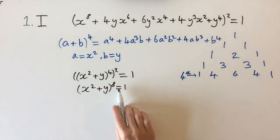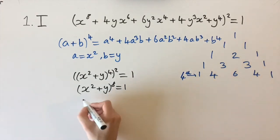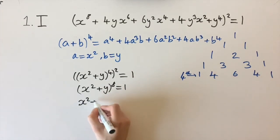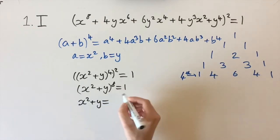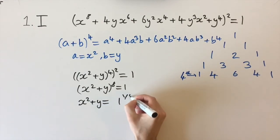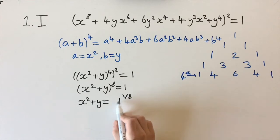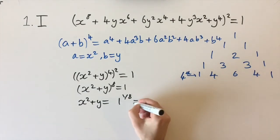Now to solve this, we can just think of taking the 8th root of both sides. This would give us x² + y equals 1 to the power of 1/8. What's convenient is 1 to the power of anything is just itself, so we just have 1.